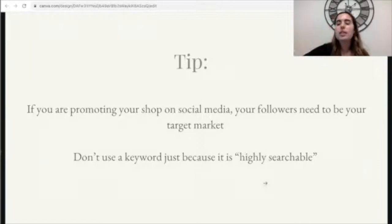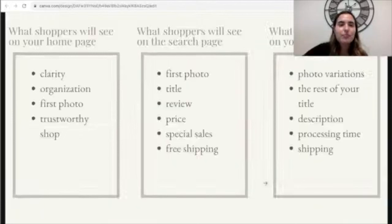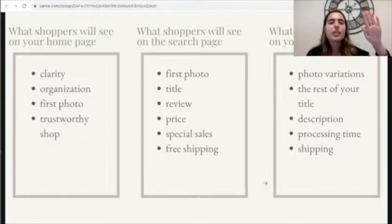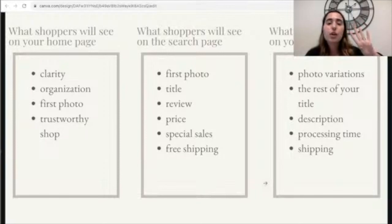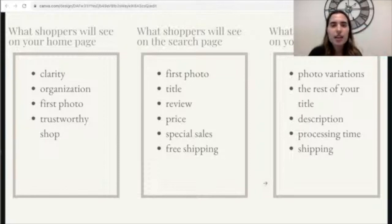Don't use search terms just because people are searching for them — actually use terms that relate to your specific item. Let me recap. What shoppers will see on your homepage: clarity, organization, first photo, trustworthy shop. What shoppers will see on the search page: first photo, title, reviews, price, special sales, and free shipping. What shoppers will see on your listing: photo variations, the rest of your title, description, processing time, and shipping. Those are all the details — big and small — that you need to pay attention to when it comes to your conversion rate.